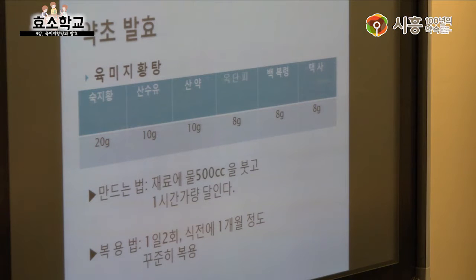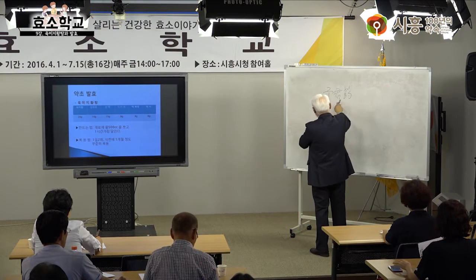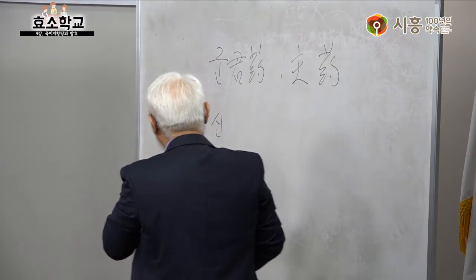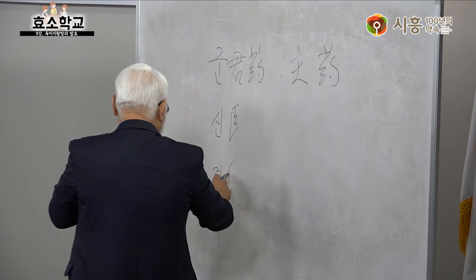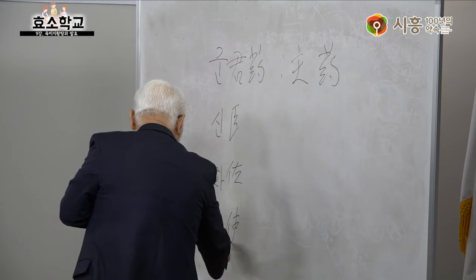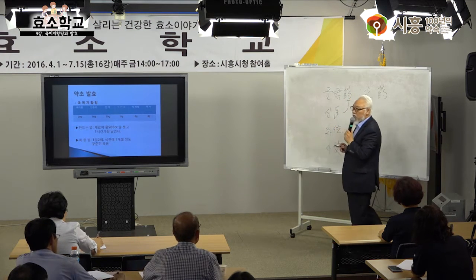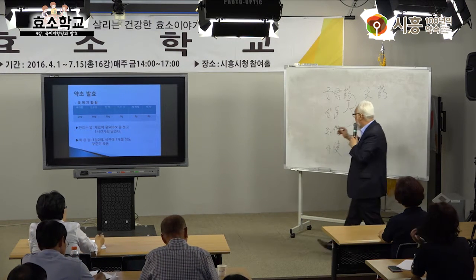약은 반드시 군신좌사를 써야 해요. 군약은 주약이라고도 하고, 신약은 군약을 도와주는 보조 약입니다. 좌약은 신약과 군약을 도와주면서 경락에 갈 수 있도록 유도해주는 역할을 합니다.